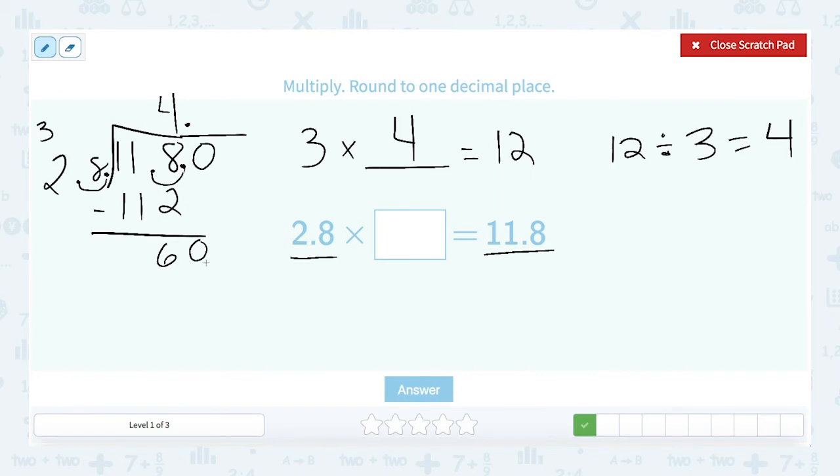28 goes into 60 how many times? Well 28 is pretty close to 30. 30 would go into 60 twice. So 2 is a pretty good guess. 2 times 8 is 16. And 2 times 2 is 4 plus that 1 is 5. And I'm going to subtract.